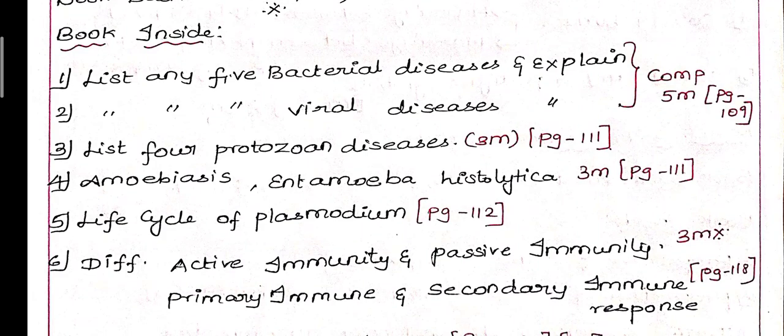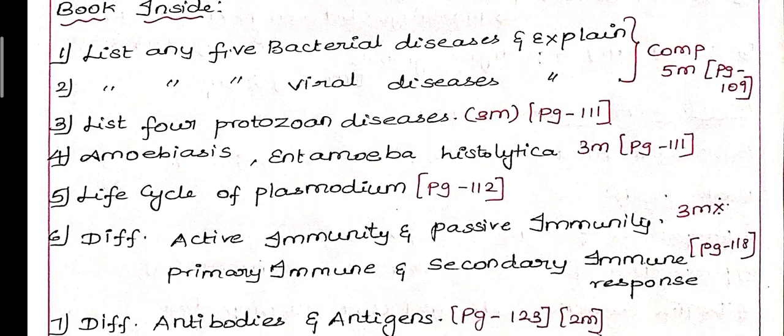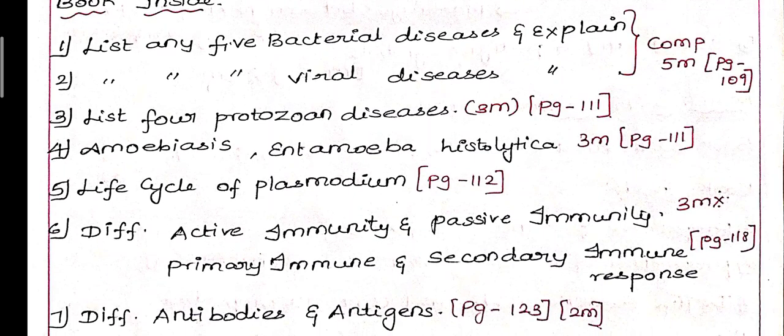First question: List any 5 bacterial diseases and explain. Second question: List any 5 viral diseases and explain. There are boxes for bacterial diseases on one side and viral diseases on the other, on pages 109 and 110. When asked about diseases, specify if bacterial, viral, or other types. Answer with 5 diseases as requested.